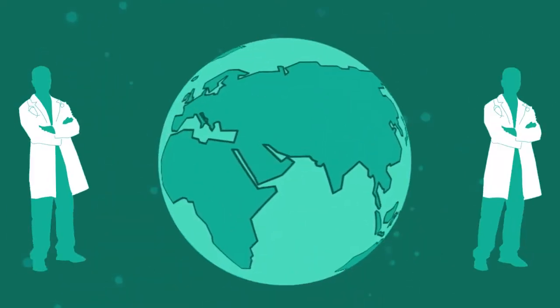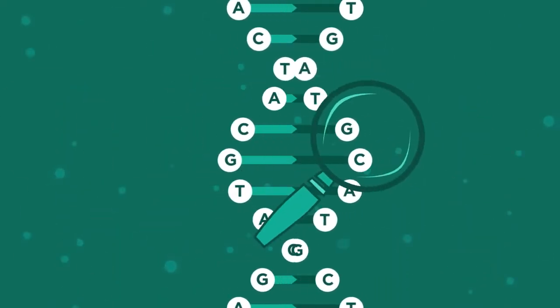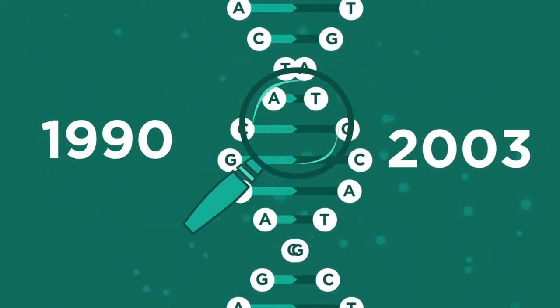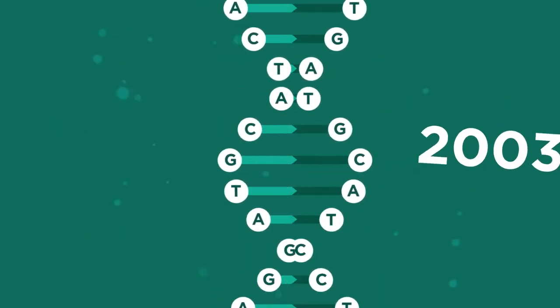The Human Genome Project was an enormous project that saw scientists around the world collaborate to work out the sequences of bases in the human genome. The project started in 1990 and was completed by 2003, two years ahead of schedule.